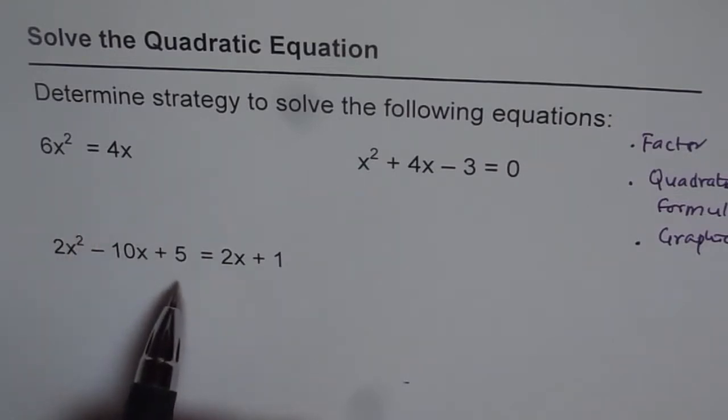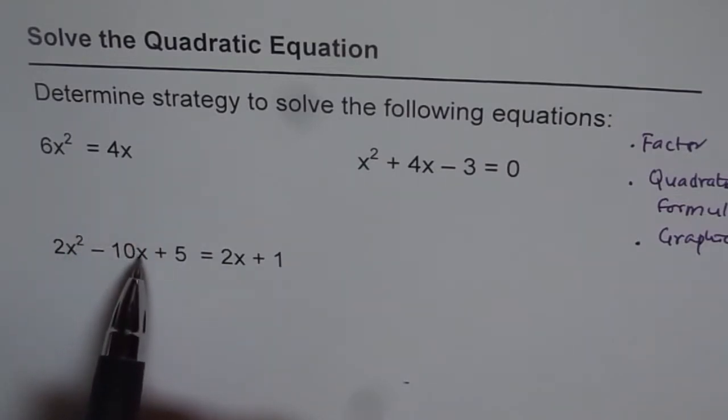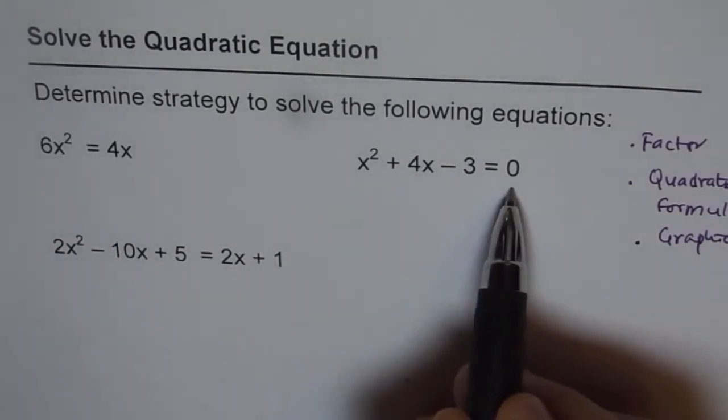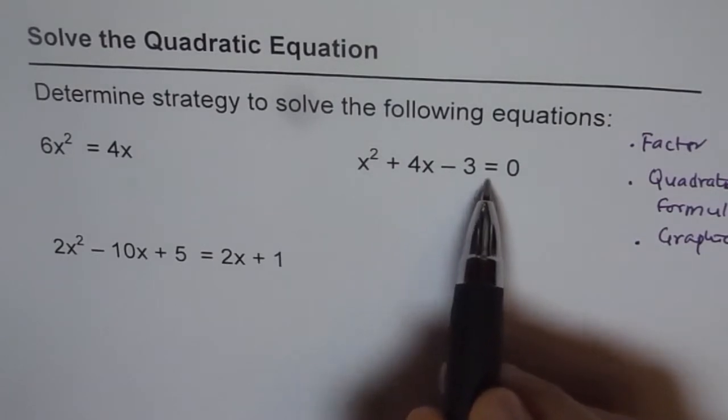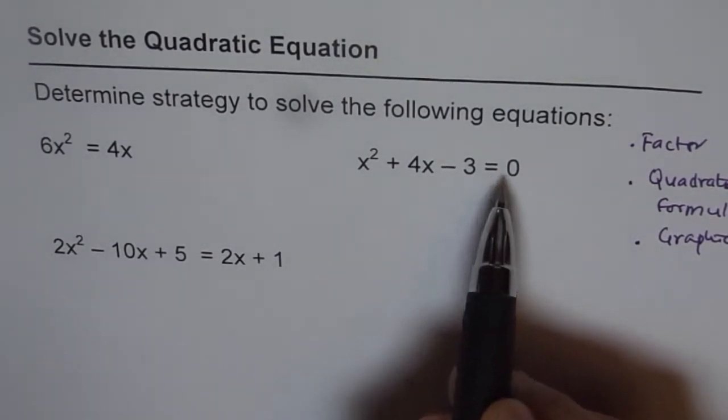So in case you have a quadratic equation of this form, the first step should be to bring all the terms to one side as shown here with this equation, which is x² + 4x - 3 = 0. So once you have all the terms on one side and 0 on the other,